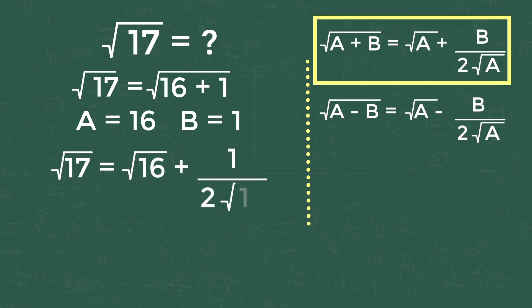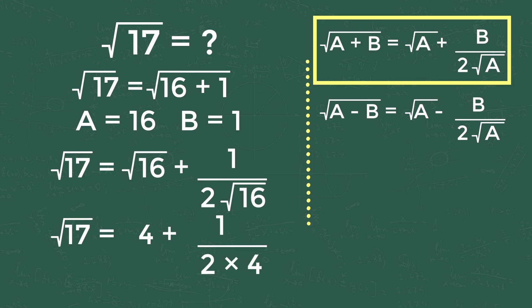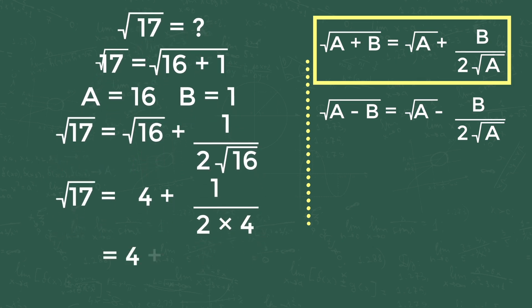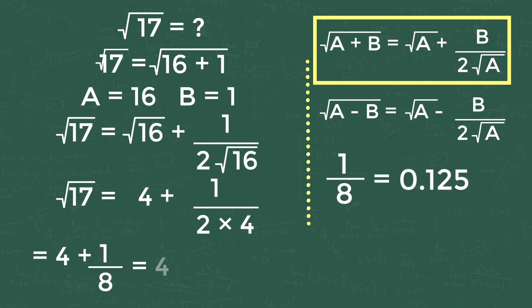So the equation becomes root 17 = root 16 plus 1 divided by (2 × root 16). We know root 16 is 4, so it becomes 4 plus 1/8. Since 1/8 = 0.125, we get 4 + 0.125 = 4.125. The answer is approximately equal to 4.125.